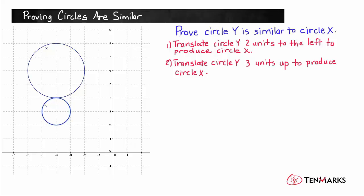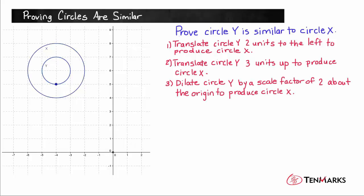So we'll take circle Y and we'll go up one, two, three units, and now circle Y is in the center of circle X, and there's only one step left. We need to dilate circle Y so that it fits circle X exactly, and that would mean increasing it by a scale factor of two. And when we do that, the two circles match exactly.